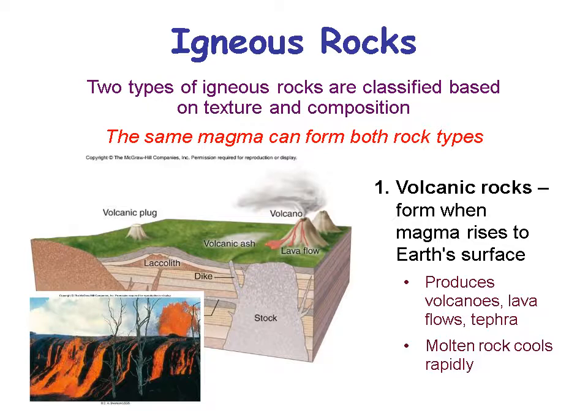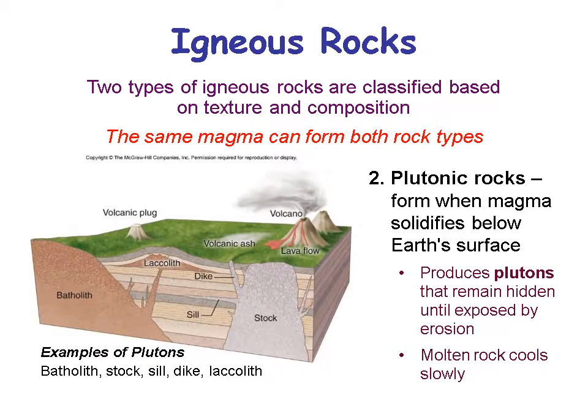First, there are volcanic rocks, which form when magma rises to the Earth's surface and molten rock cools rapidly. You also have plutonic rocks, where rocks cool slowly underground, so the crystals have a chance to grow large. Granite is a plutonic kind of rock, and that's why you can see the minerals in it — because they grew large.